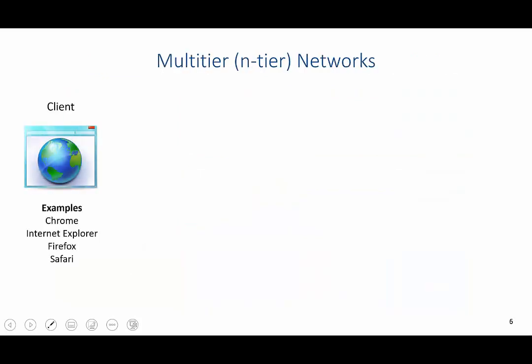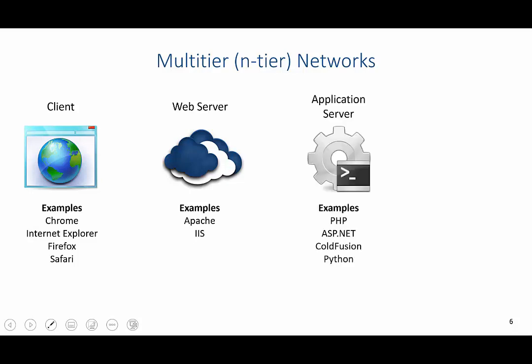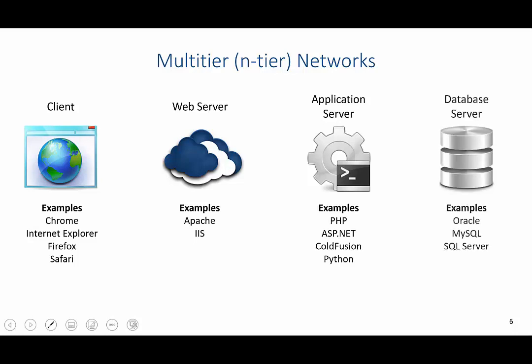In a multi-tier network we have several components. Users connect as clients via a browser — for example, Chrome, Internet Explorer, Firefox, Safari, or Edge. The web server will primarily use Apache or IIS, which are the dominant ones in the market. An application server is then connected to, rendered using PHP or other applications — we are focusing on PHP in this class. And finally, we have a database server; the top three are Oracle, MySQL, and SQL Server.